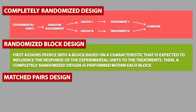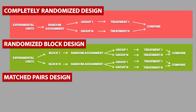A randomized block design first assigns people into a block based on a characteristic that is expected to influence the response of the experimental units to the treatments. Then, a completely randomized design is performed within each block. This is what the diagram would look like. Block N means that you can have any number of blocks.